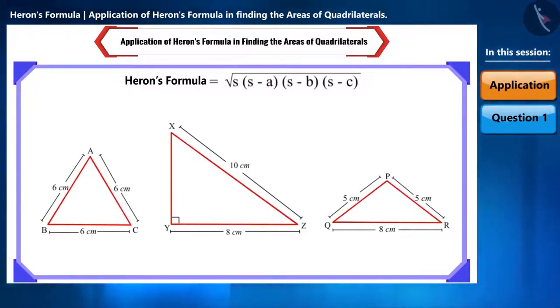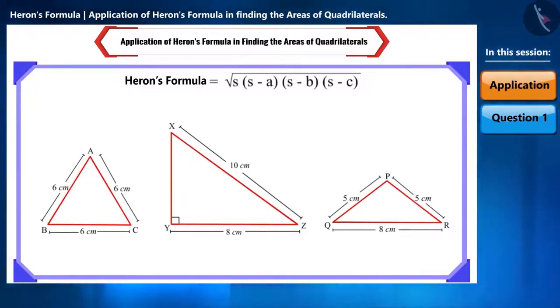But can we use it to find the area of other polygons? Can these polygons be divided into triangles? Yes. If we draw a diagonal in a quadrilateral, then we will get two triangles.